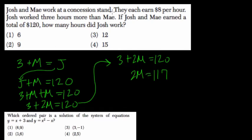Josh and Mae work at a concession stand. They each earn $8 per hour. Oh, that's the mistake. So Josh worked three more hours than Mae, right? So whatever Mae worked, the amount of hours you add plus three and you get Josh. But here, it's not J plus M equals 120.